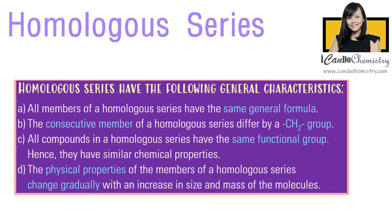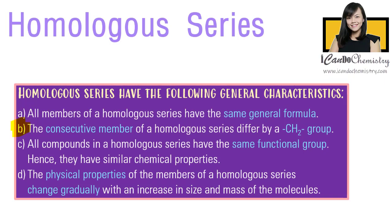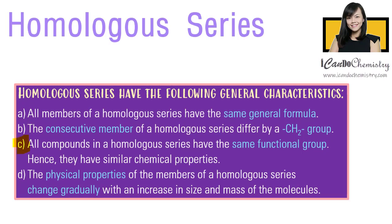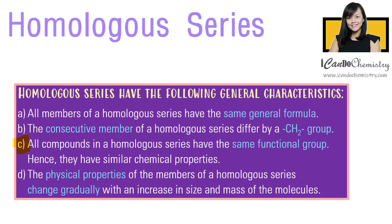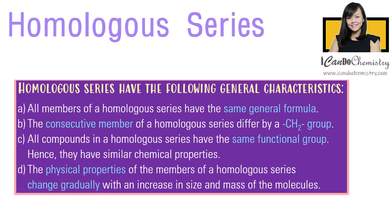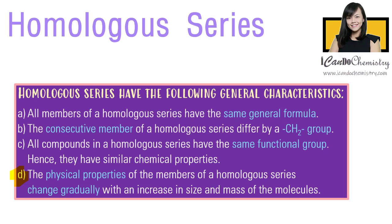Homologous series have the following general characteristics. All members of a homologous series have the same general formula. The consecutive member of a homologous series differ by a CH2 group. All compounds in a homologous series have the same functional group, hence they have similar chemical properties. The physical properties of the members change gradually with an increase in size and mass of the molecules.